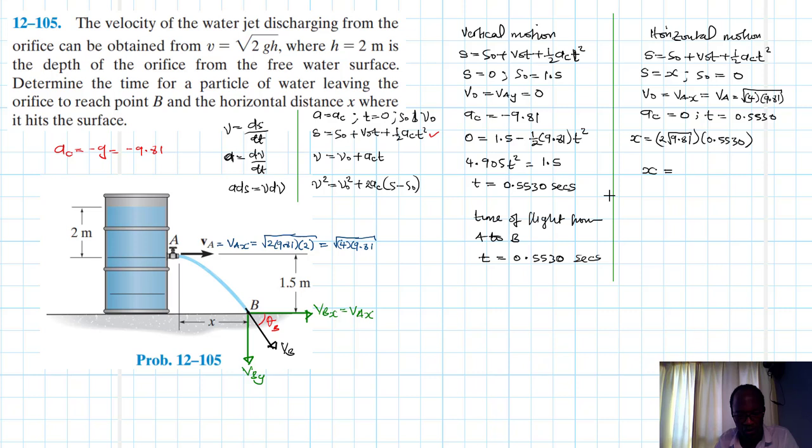Therefore our x, 0.553, is just going to be equal to that's 2 root of 9.81 times 0.553, and this gives us 3.46 meters.